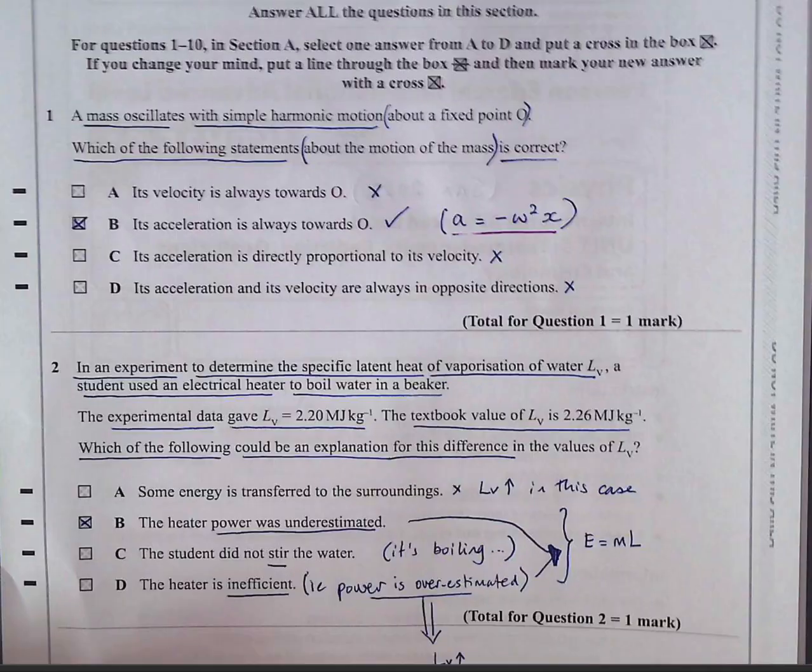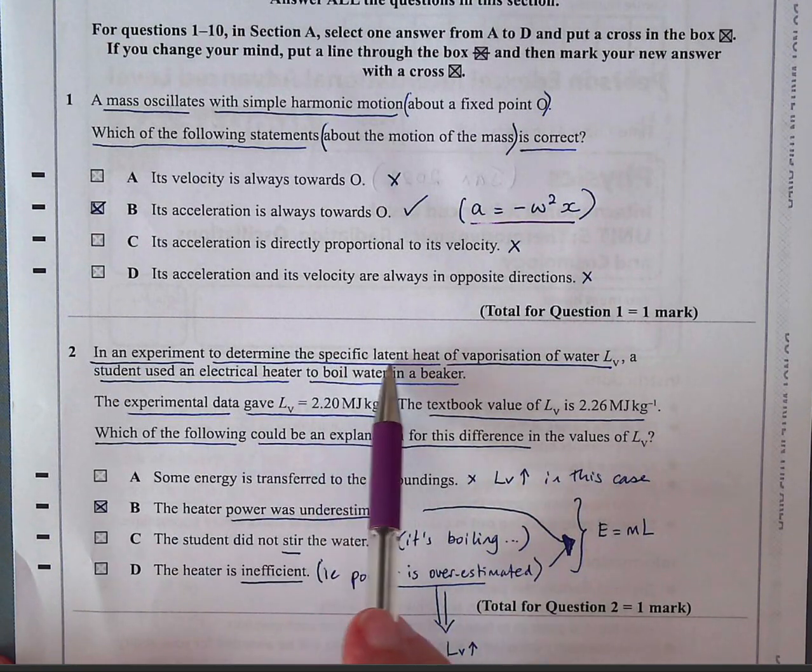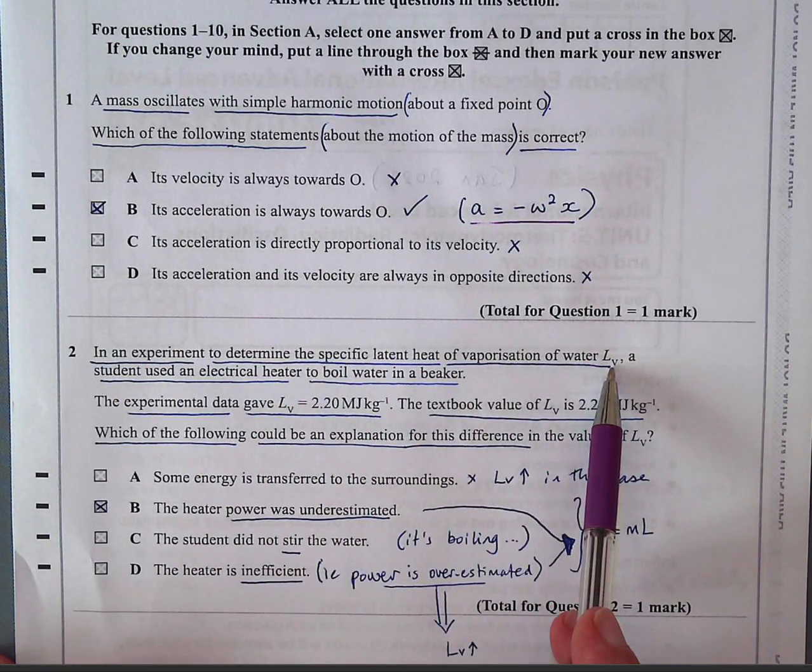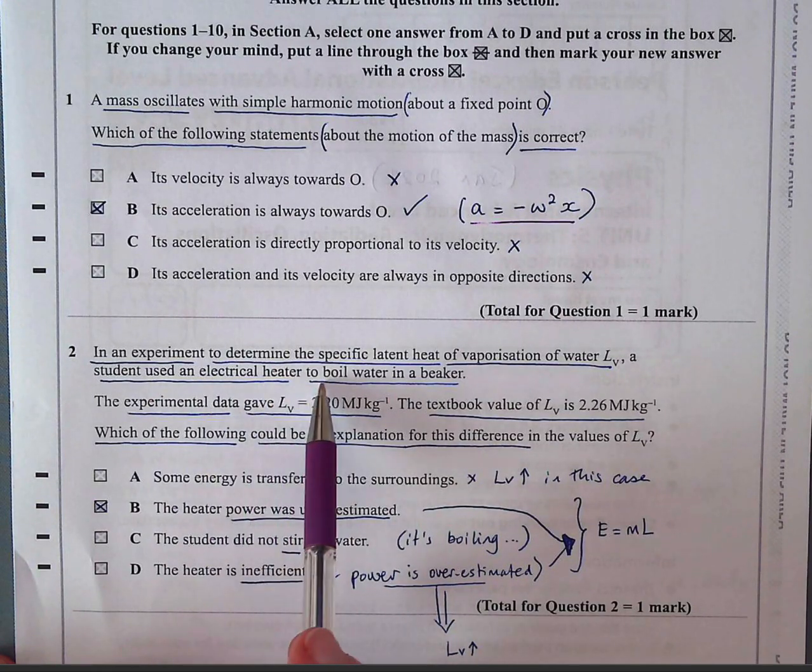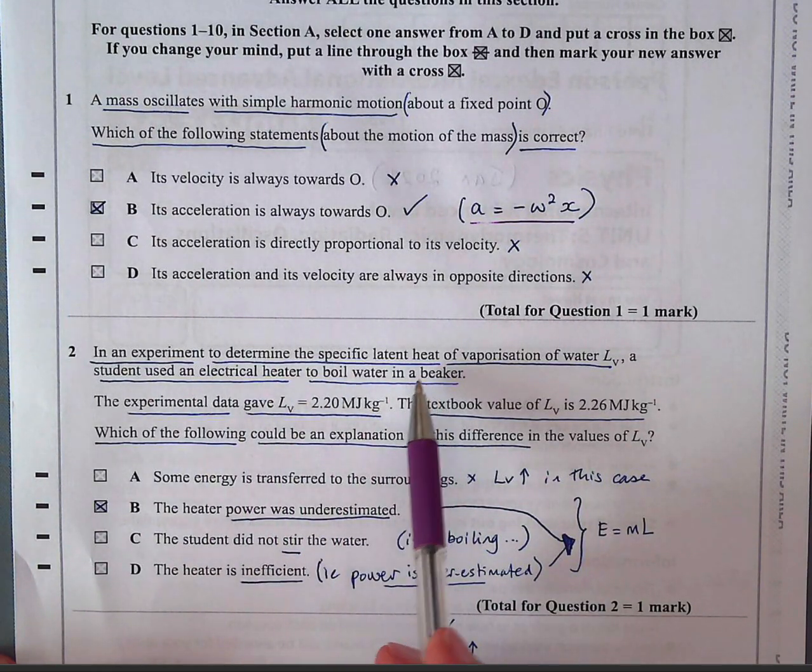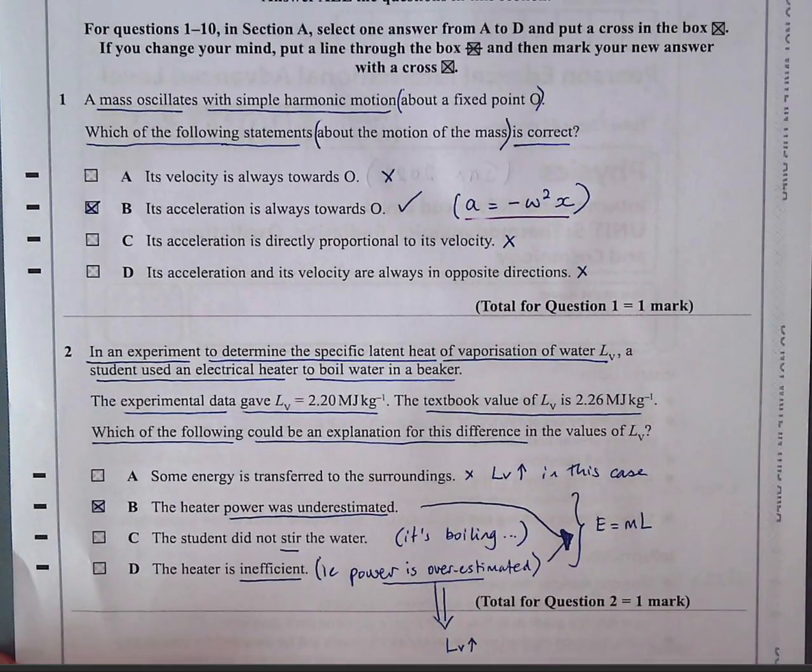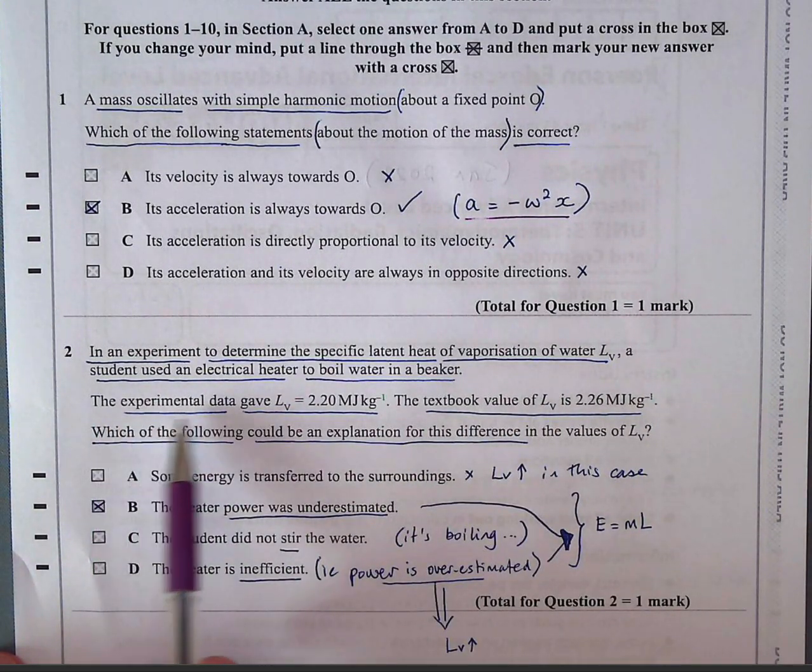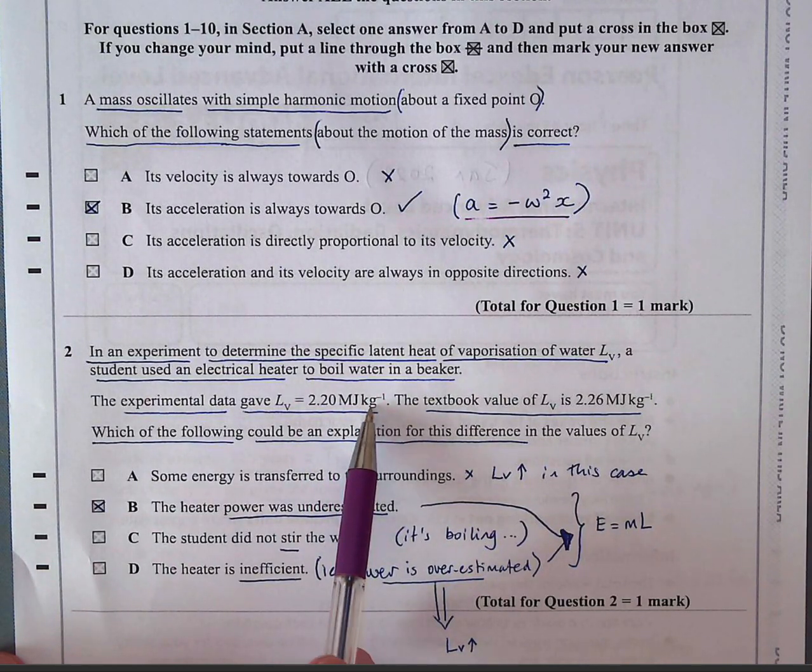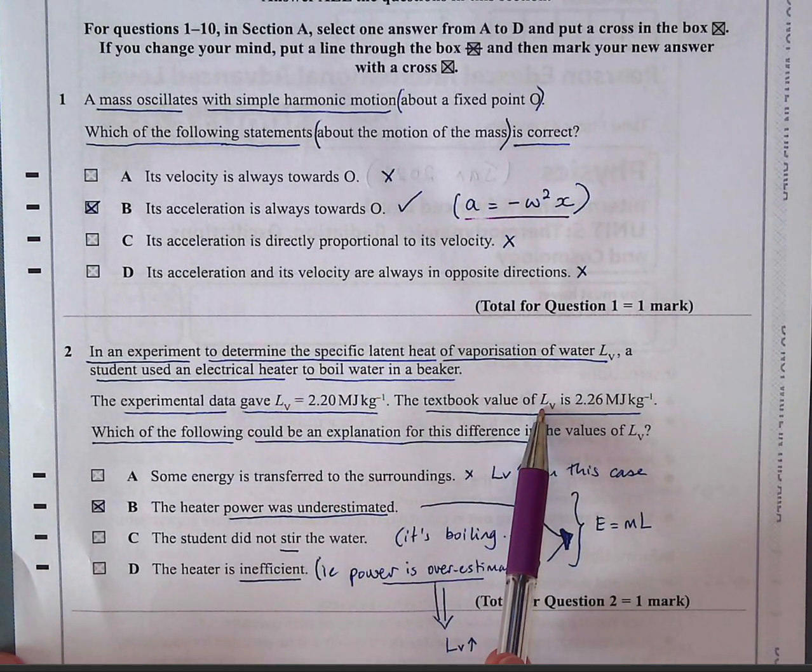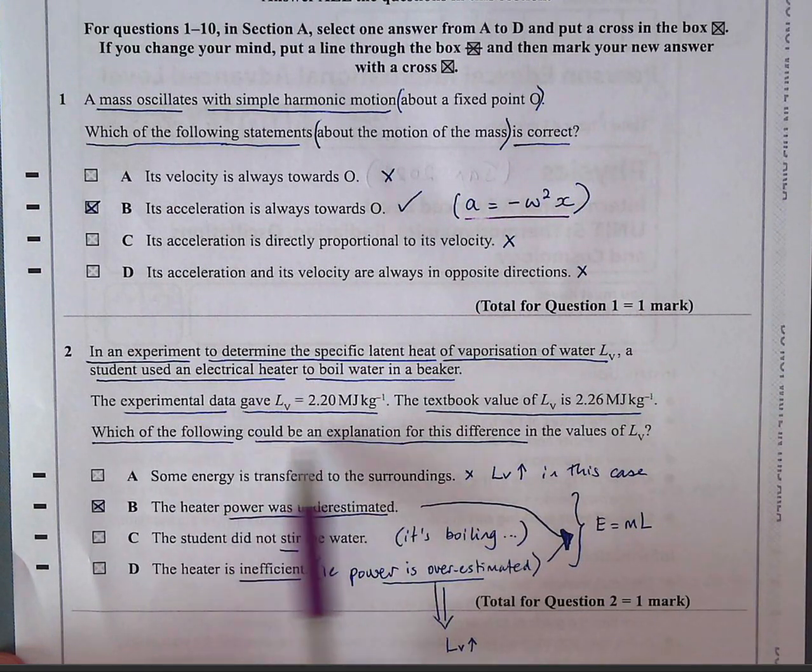Moving on to question 2, it's about latent heat from the thermodynamic section of the syllabus. In an experiment to determine the specific latent heat of vaporization of water, LV is the code they're using for it, the symbol. A student used an electric heater to boil water in a beaker. So at boiling point, all energy supplied will go to vaporizing, breaking bonds from liquid state to vaporize it. The experiment data gave a value that they calculated to be 2.20 MJ per kilogram, whereas the textbook value for the latent heat of vaporization is higher than that, 2.26 MJ per kilogram.